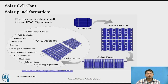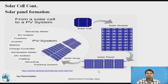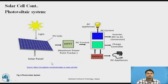Solar panel formation: a single cell is connected in series and parallel combinations to form one panel. These panels are again connected in series and parallel depending on voltage and current requirements — cells in series for more voltage, cells in parallel for more current. A typical photovoltaic system application includes a generator, an MPPT (maximum power point tracking) system, and an inverter, because the generated power is DC and needs an inverter.